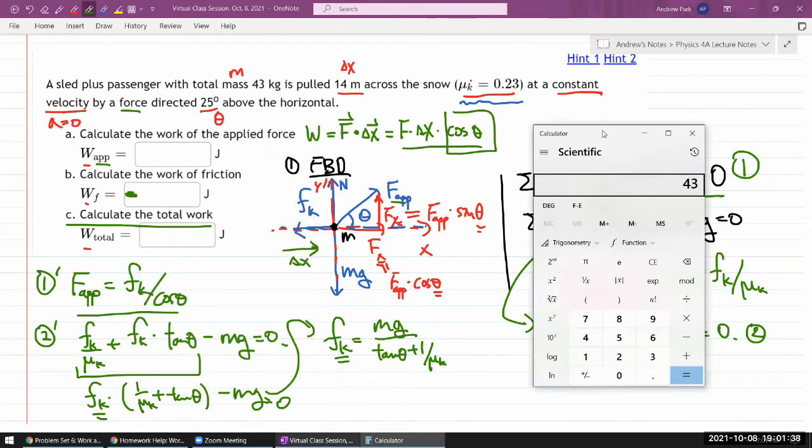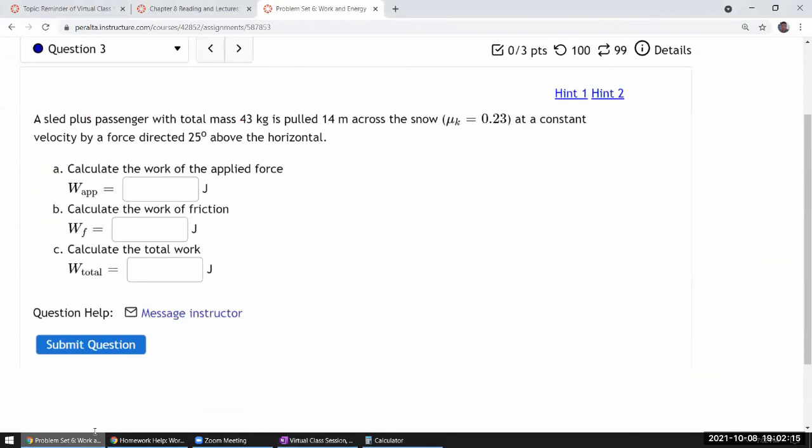Let's do mg, 43 kg times g, 9.8, divided by tangent theta, so 25 tangent, plus 1 divided by 0.23. That's the ratio. And then I'm going to multiply that by 14 meters. It's equal to 1225 joule. So minus 1225 joule. Let's plug it in, and let's hope it's correct.